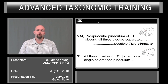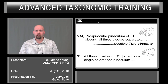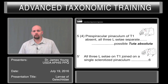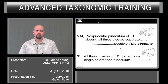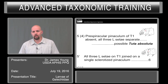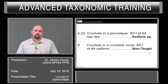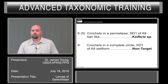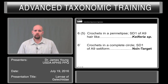Couplet 5 is where Tuta absoluta will come out. The character to look for is whether all of the LCD setae are on a single sclerotized pinaculum, or if they're separate. If the 3 CD are separate, you're possibly looking at Tuta absoluta — submit this to a specialist. If all 3 are combined on a well-defined pinaculum, continue with the key to couplet 6. If the crochets are in a pen ellipse and SD1 of A9 are hair-like, it's most likely a Keiferia species. If otherwise, it would be a non-target.